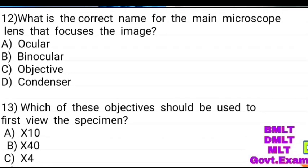What is the correct name for the main microscope lens that focuses the image? Options: ocular, binocular, objective, condenser. Answer: objective.